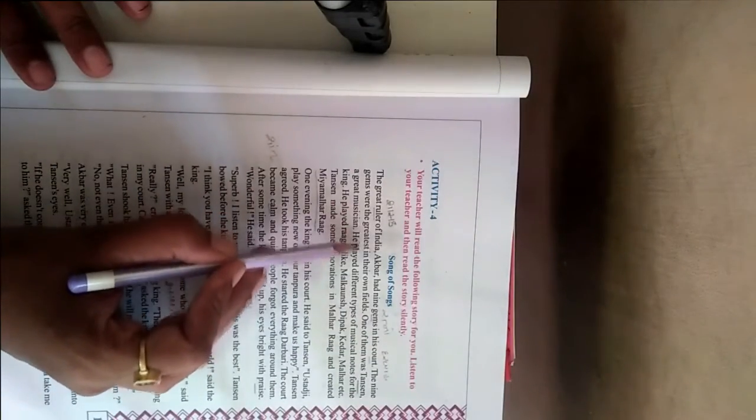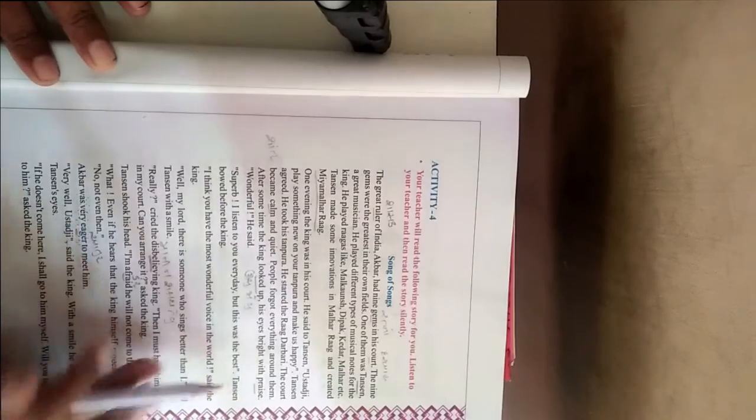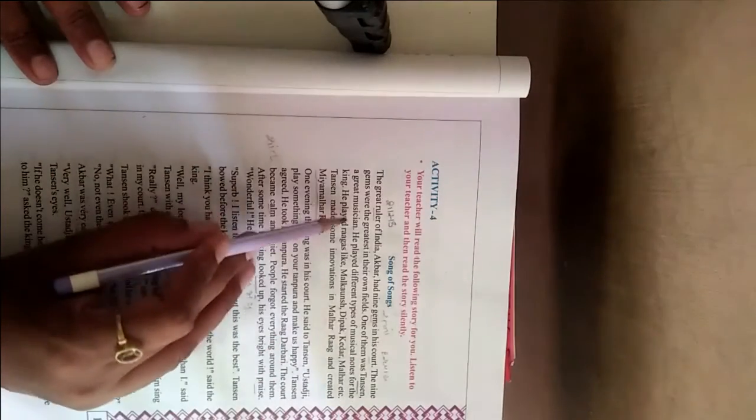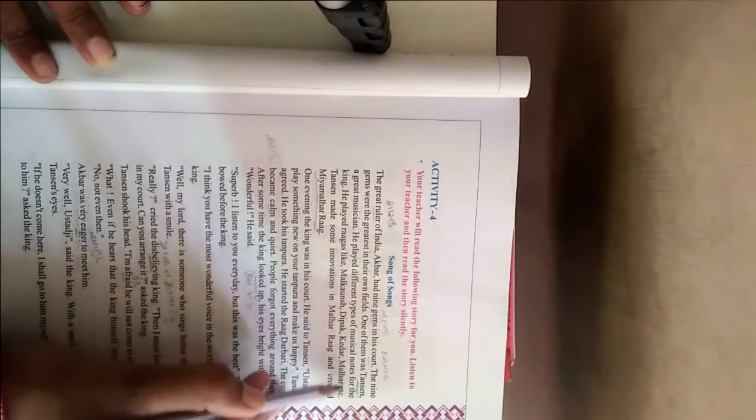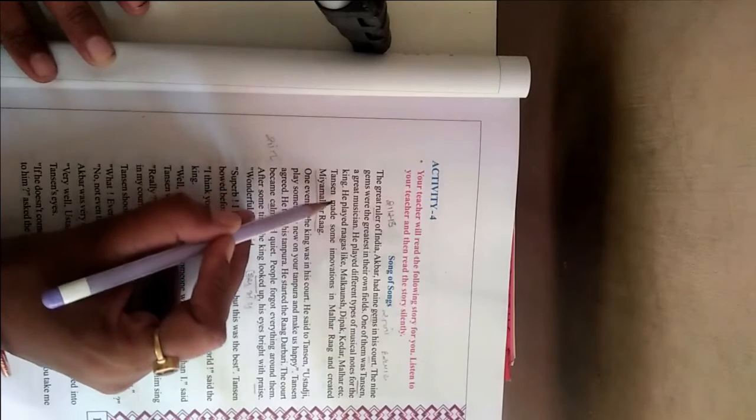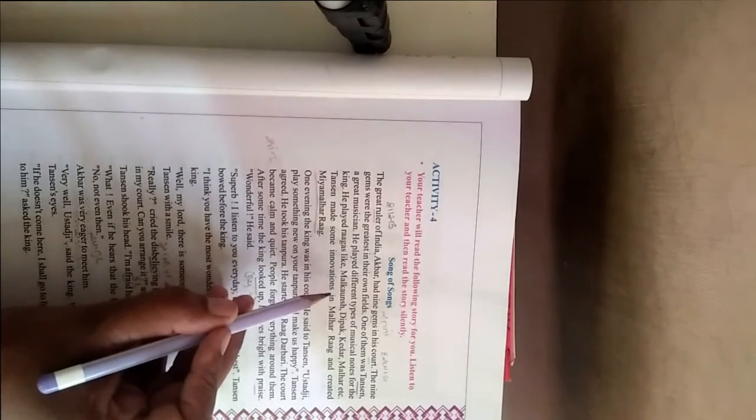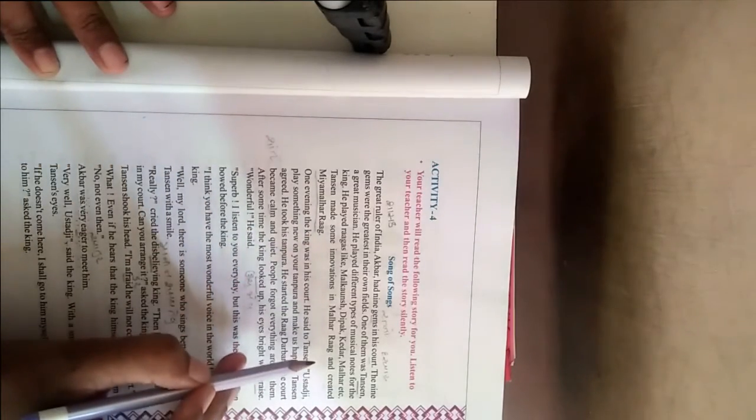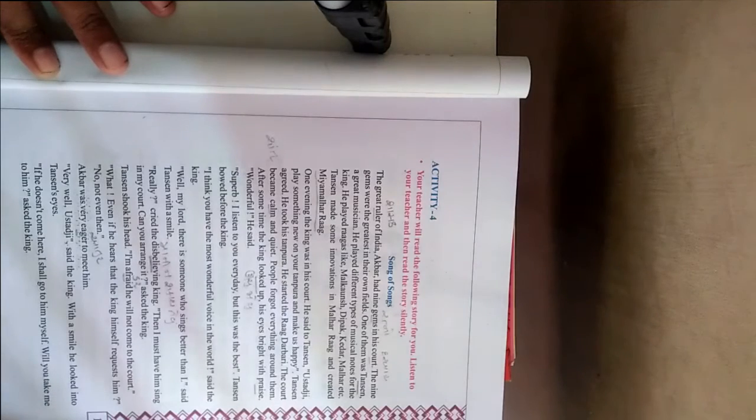The nine gems were the greatest Indians in their own fields. One of them was Tansen, a great musician. He played different types of musical notes for the king. He played ragas like Malkauns, Deepak, Kedar, Malhar, etc. Tansen made some innovations in Malhar raag and created Mia Malhar raag.